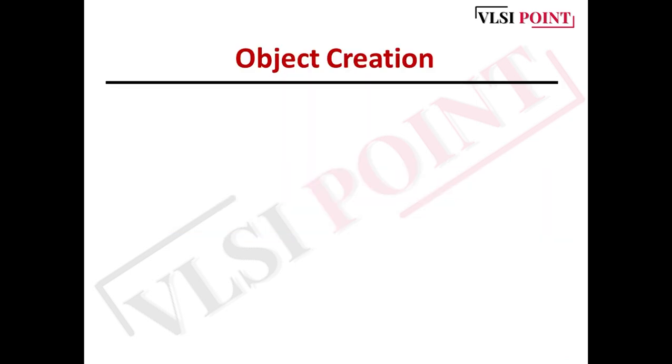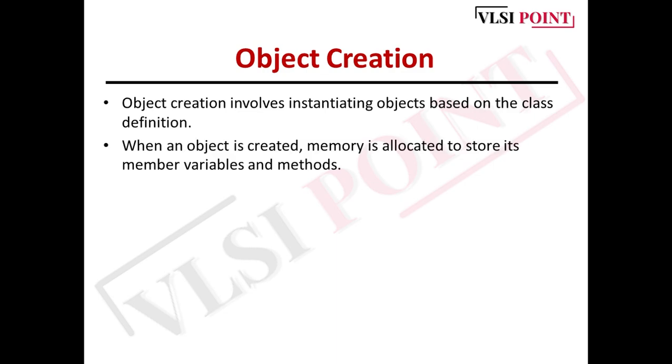Next is object creation. Object creation refers to the instantiation of objects based on the blueprint provided by the class definition. There is a simple process: first, we need to define the class. A class defines the properties (variables) and methods that objects created from that class will possess. It encapsulates data and behavior into a single unit, providing a blueprint for creating objects.